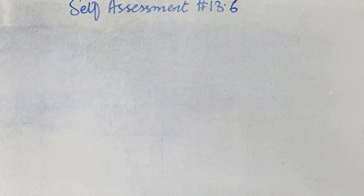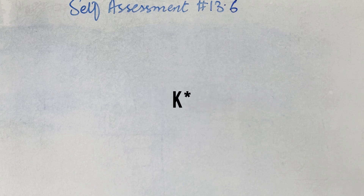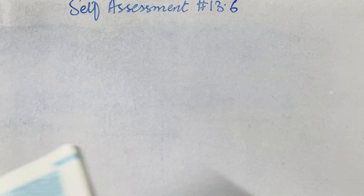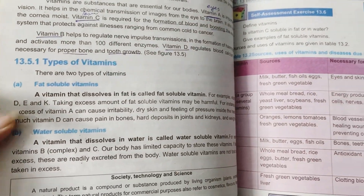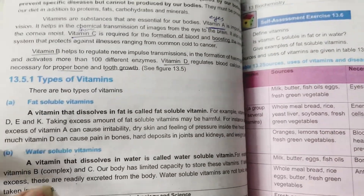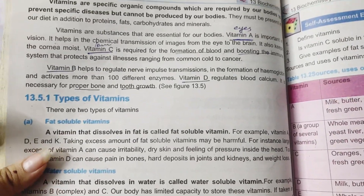Next, give examples of fat-soluble vitamins. The fat-soluble vitamins are vitamin A, D, E, and K. This is already written in the paragraph on page number 102 under 'fat soluble vitamins'.